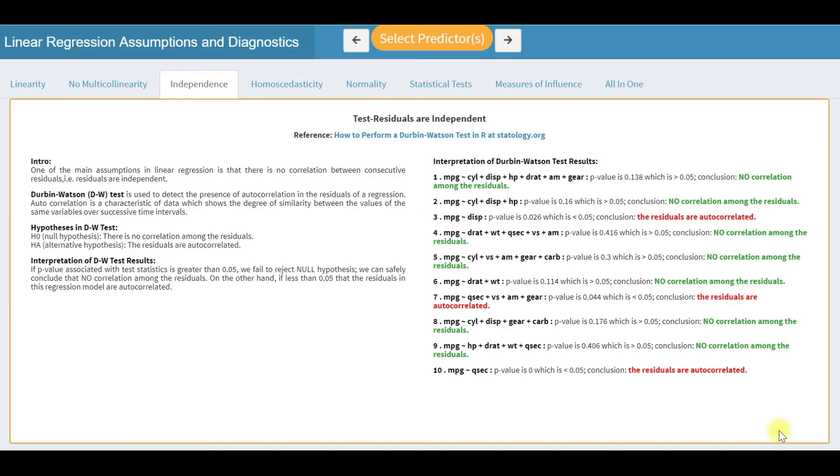From here, let us do residual diagnostics. First is the test of autocorrelation. We use the Durbin-Watson test. Interpretation of results are provided.